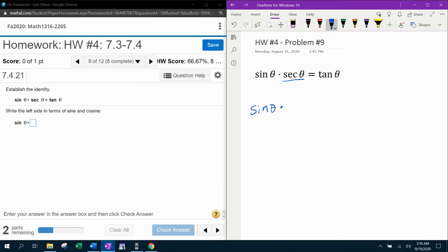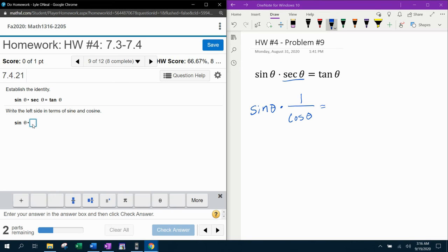So doing a trig substitution, we can replace secant theta with one over cosine theta because they are reciprocal identities. So that's going to be one over cosine theta. And they do have a theta to choose from.